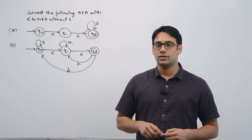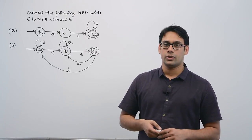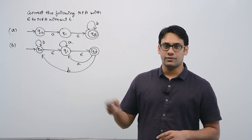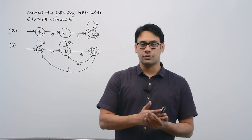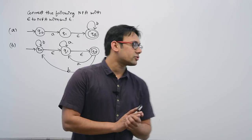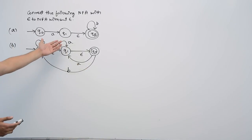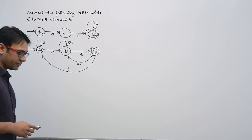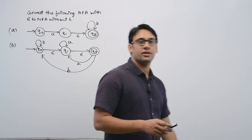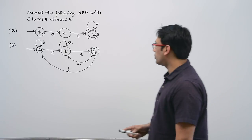Now let us convert the following Epsilon-NFAs to NFA. After this example, this topic will be clear. The first is we have this Epsilon-NFA and we want to convert it to an NFA. For both these NFAs there are only two symbols in the language, which are A and B.